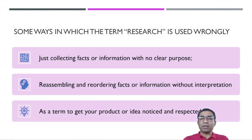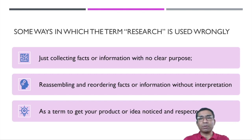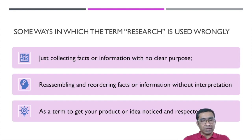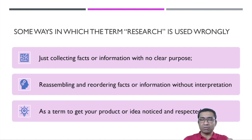Finally, some people use the word 'research' just to get their product or idea noticed or respected, without any clear purpose or objective — that is not research. Some people use this word to get more attention from the audience. Research methodology means starting with a clear objective — a research question — then collecting data, analyzing it, and forming a report. If all these steps are completed, it is called research. If any step is missing, it is not a research process. Research methodology is a very wide term.